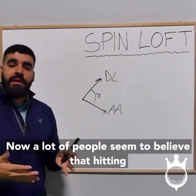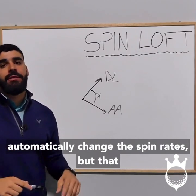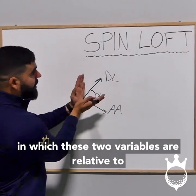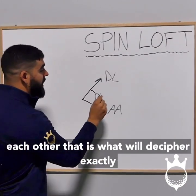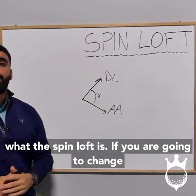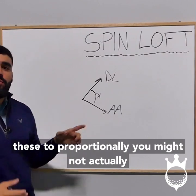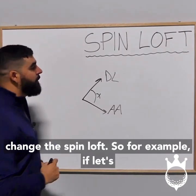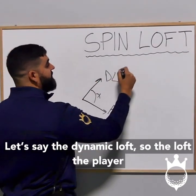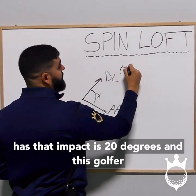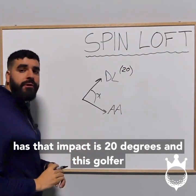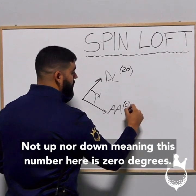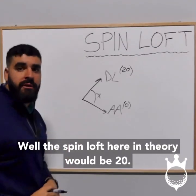A lot of people believe that hitting down versus hitting up on the golf ball will automatically change the spin rates, but that is not necessarily true. Because it is the angle at which these two variables are relative to each other that will determine exactly what the spin loft is. If you change these two proportionally, you might not actually change the spin loft. For example, if the dynamic loft — the loft the player has at impact — is 20 degrees, and this golfer is hitting completely flat into the golf ball, meaning the attack angle is zero degrees, then the spin loft in theory would be 20.